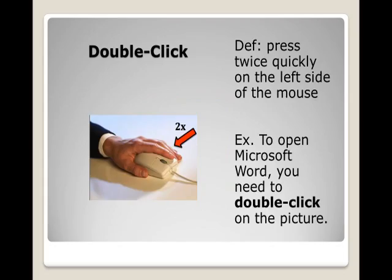Double click. Definition: Press twice quickly on the left side of the mouse. Example: To open Microsoft Word, you need to double click on the picture.